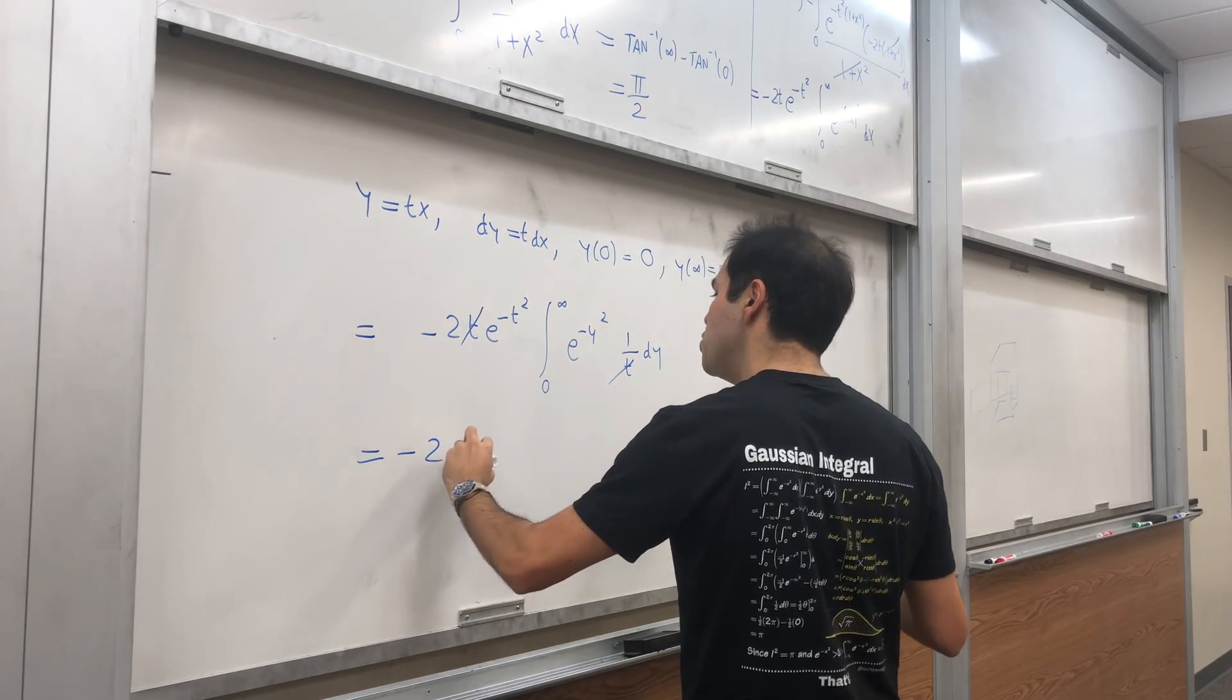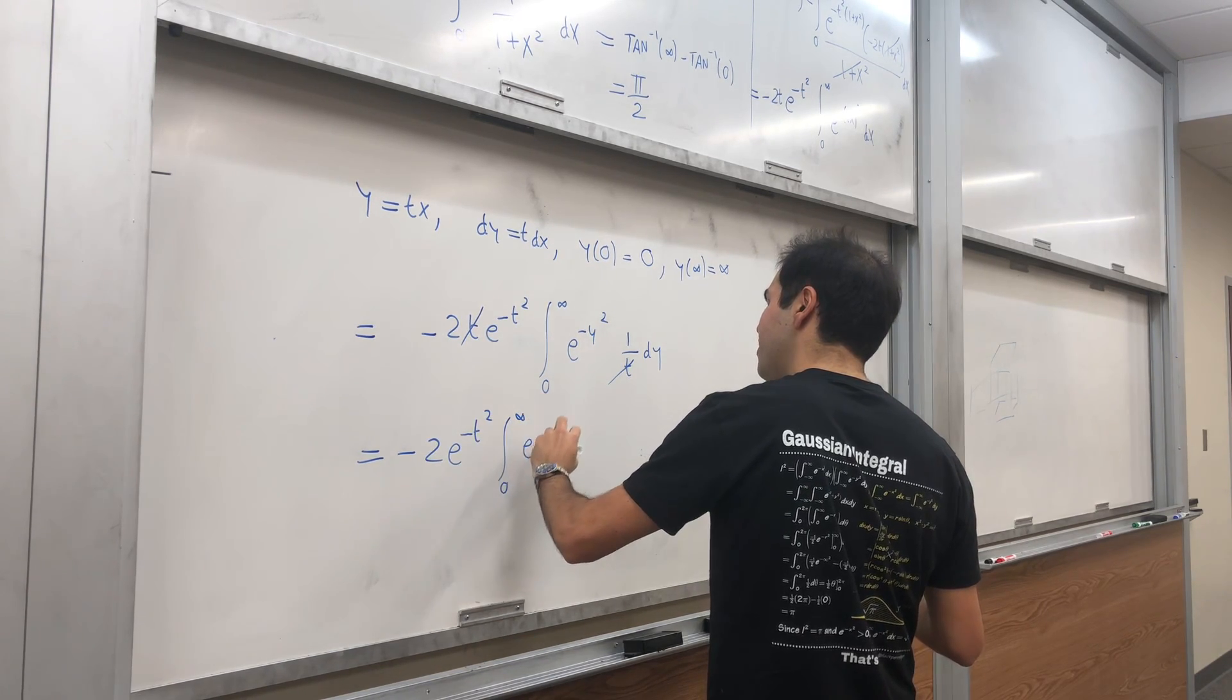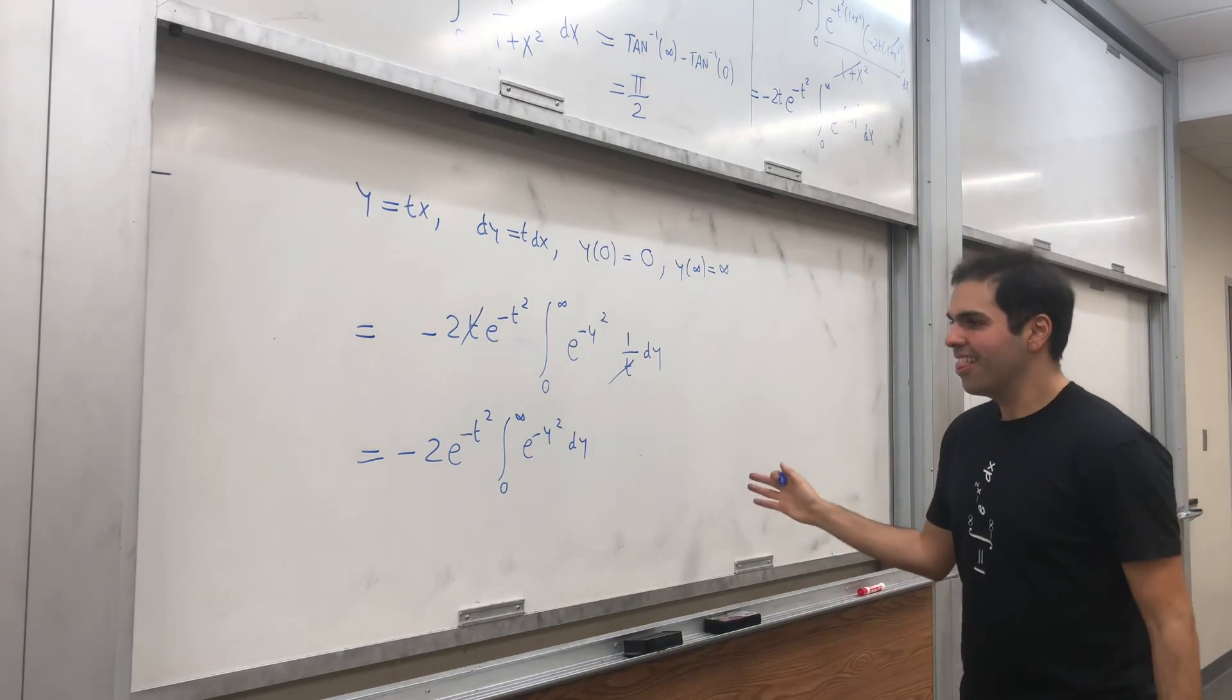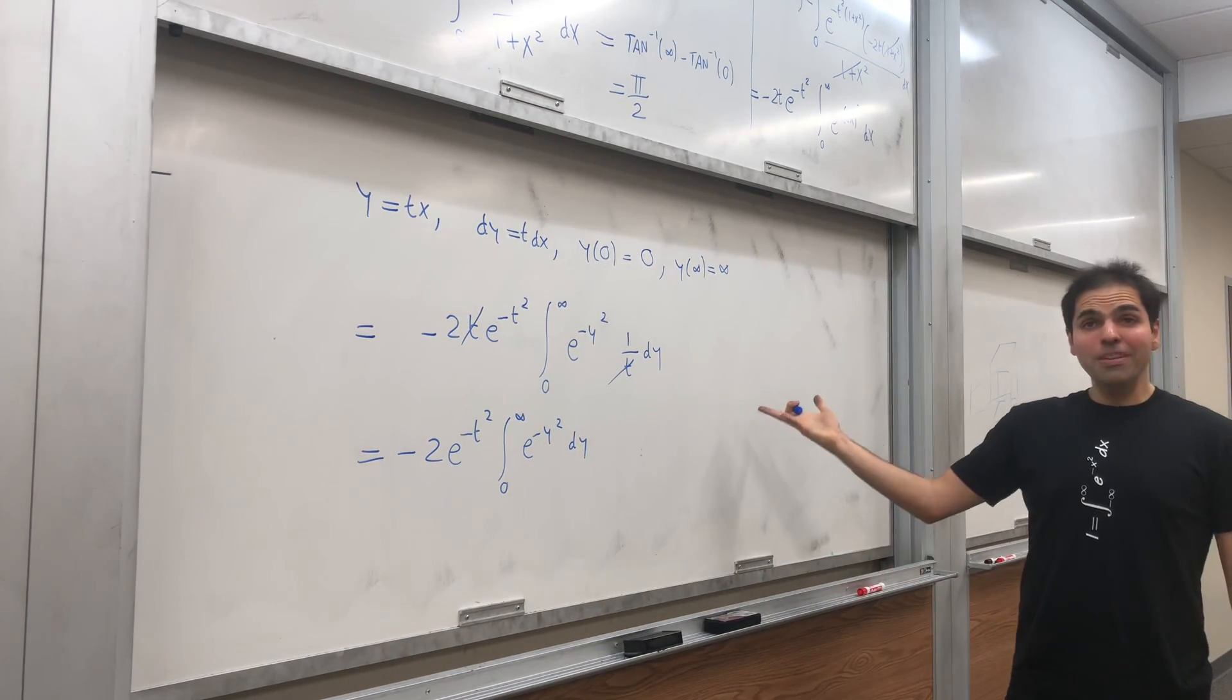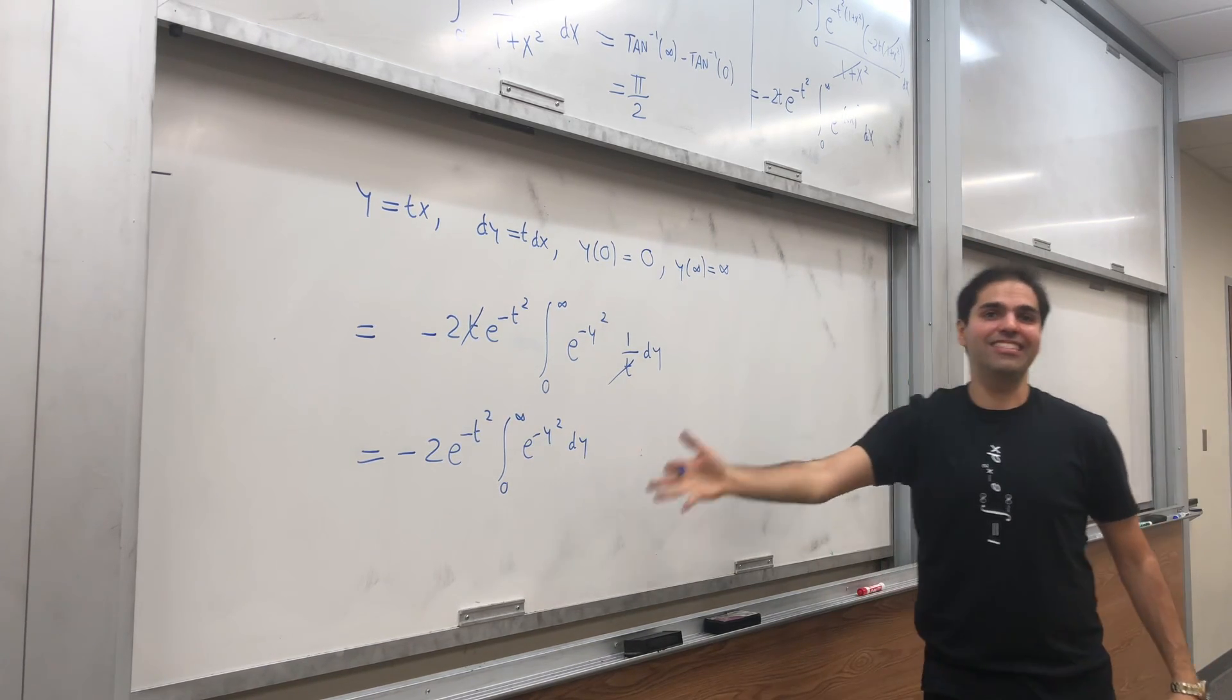And we get minus two e of minus t squared, integral from zero to infinity, e of minus y squared dy. And you may say, where is our Gaussian integral? Well, here it is. Here is where it appears,